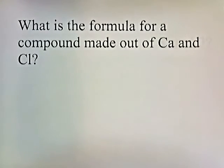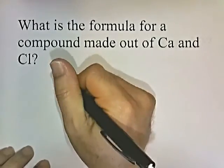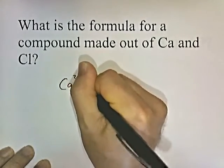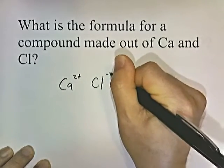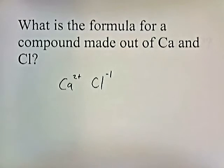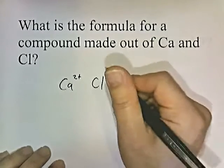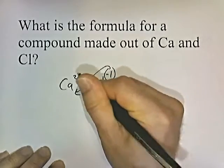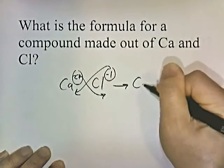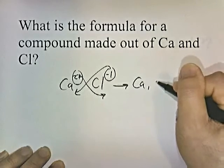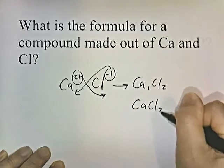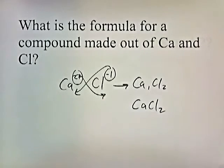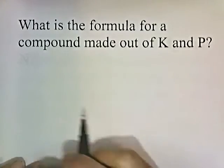Let's do some practice. What's the formula for a compound made out of calcium and chlorine? Calcium is in group two, so it's plus two. Chlorine is in group seven, so its oxidation number is negative one. Criss-cross the numbers: the formula is Ca1Cl2. Since we don't write a subscript of one, this simplifies to CaCl2.